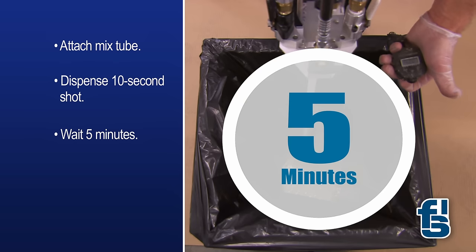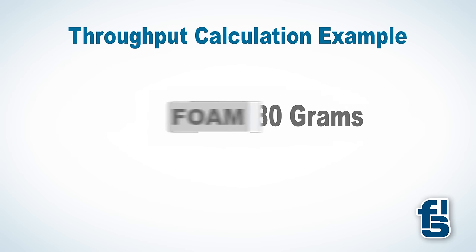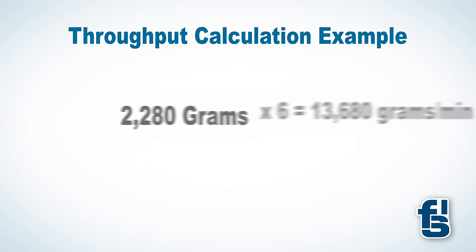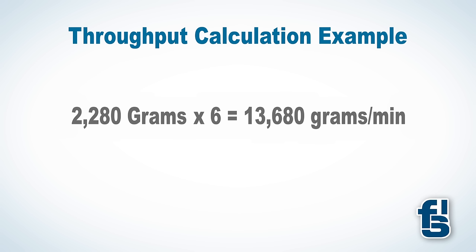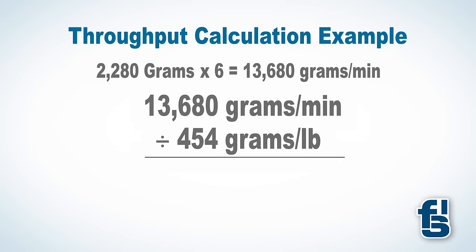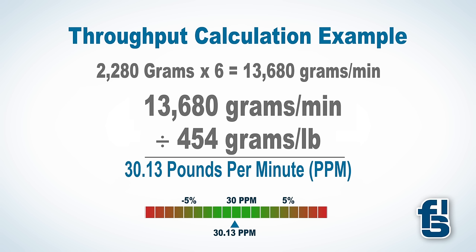Wait about five minutes until the foam is done rising, then weigh the foam on a gram scale. In this example, the foam weighs 2,280 grams. Since we want a pounds per minute value, multiply the weight of the 10-second shot by six to obtain a 60-second or one-minute equivalent. In this example, we calculated a value of 13,680. Next, divide that value by 454 to convert grams per minute into pounds per minute. In this example, the throughput of our 30 PPM gun is 30.13 PPM. The PPM is acceptable if it falls within 5% of the target throughput configured at initial setup.